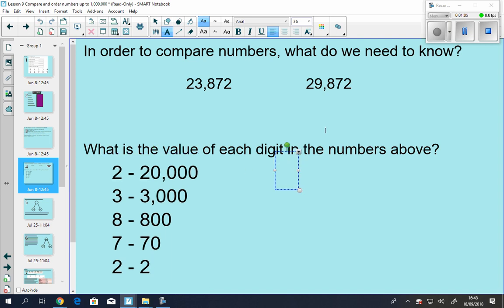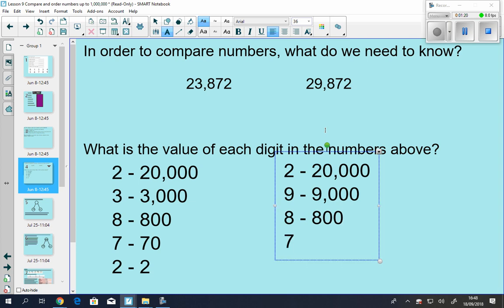Now we know our place value, now we know the value of each digit. Let's do that with the second number. So the first 2 is worth 20,000 again. The 9 is worth 9,000. The 8 is worth 800. The 7 is worth 70. And the 2 is worth 2.